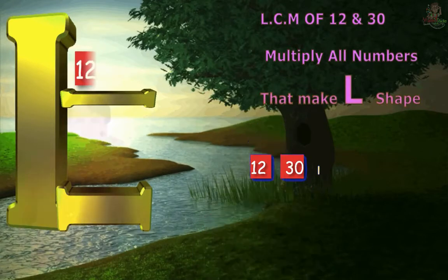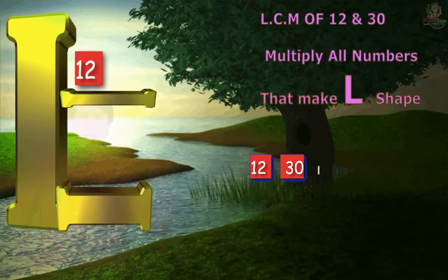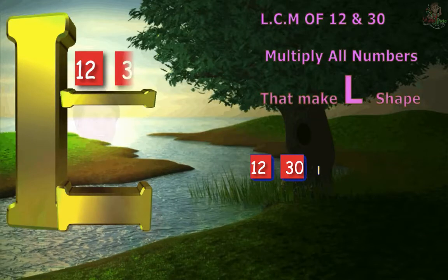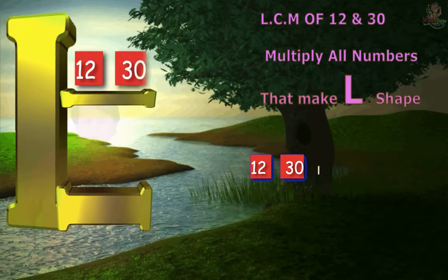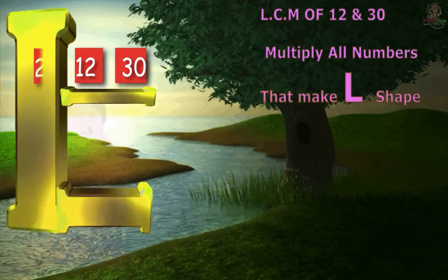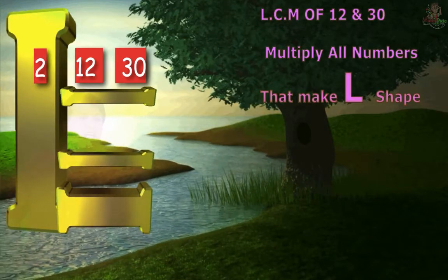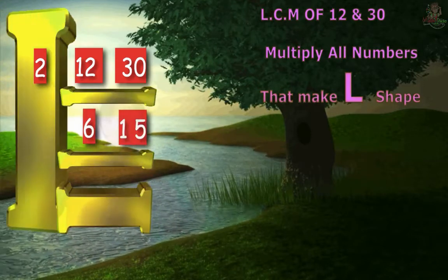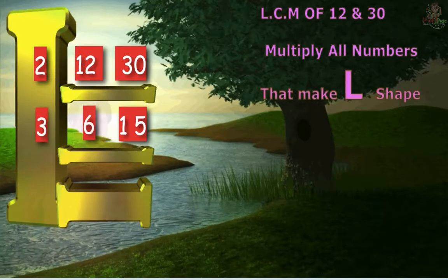So 12 and 30 is written. The ladder method is L. 12 and 30 are even numbers — even numbers divide by 2. We'll do that. First: 2 goes into 6 and 15. Then we check: 2, 6, 12; 2, 15, 30. Then I'll give it an L shape.